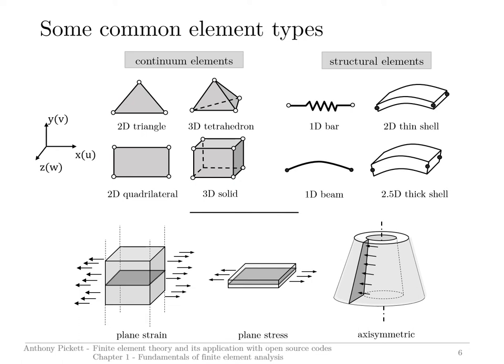We then have shell elements — 2.5D shell elements. These are usually thin, so stress through the thickness direction is assumed to be zero, though 3D thick shell elements can approximate stresses in the thickness direction. For really accurate prediction of stresses in the thickness direction, you'd need a 3D solid element. There are also others like membrane elements and joint elements.